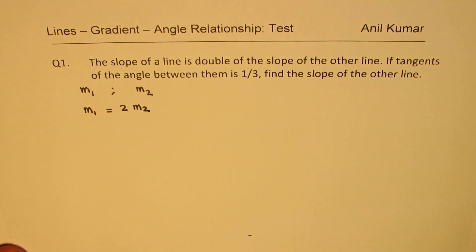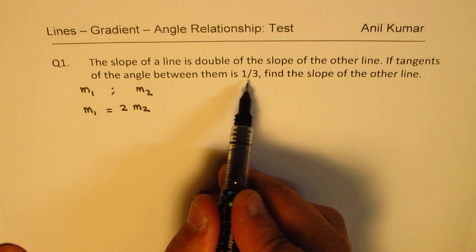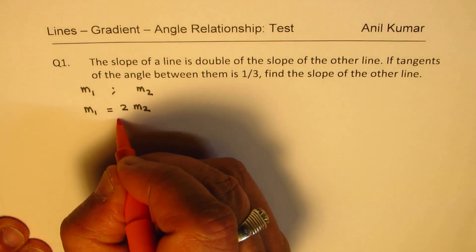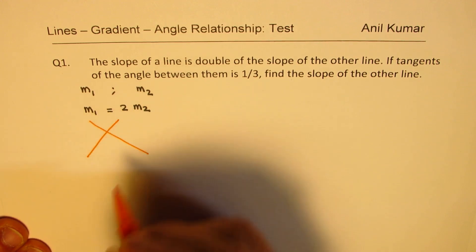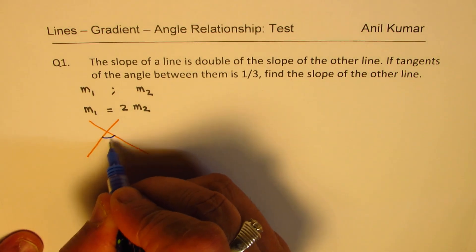That is what we are given. If tangents of the angle between them is 1 over 3, so that means what? That really means that if I have one line like this, the other one like this, right?